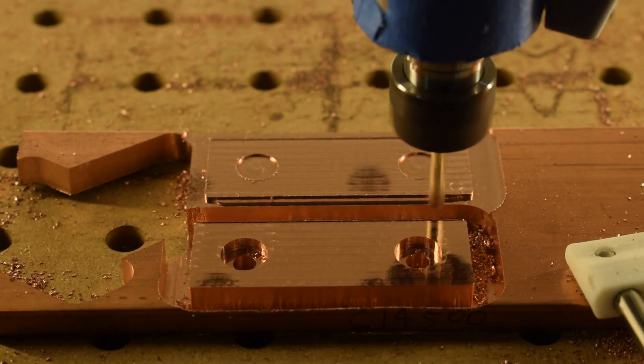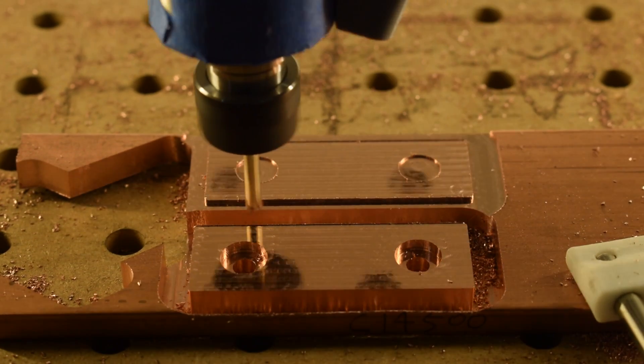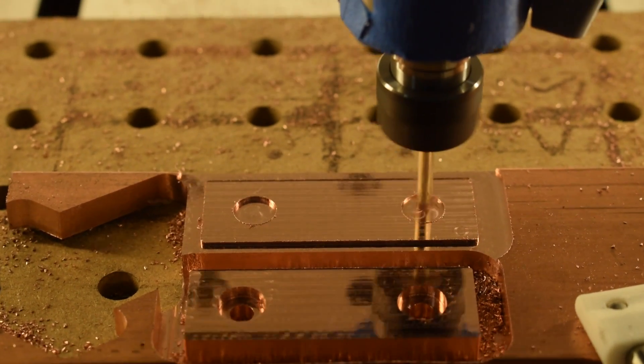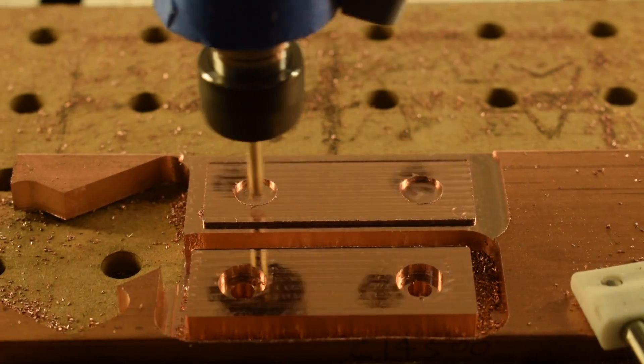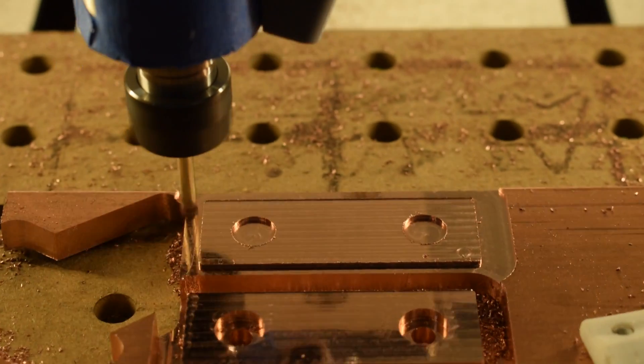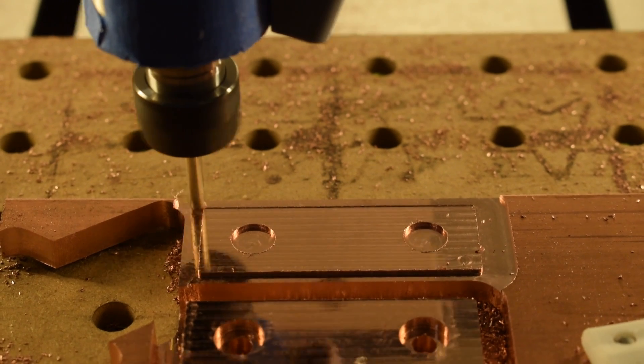Hopefully, these feeds and speeds will give you a good starting point for any projects you might have in copper. Keep in mind that if you choose other alloys or conditions of copper to machine, your optimal feeds and speeds will probably be a little different, but you'll likely be able to just scale one or more of the parameters given here like step down in order to get a usable cut. Thanks for watching folks, good luck, and have fun machining.